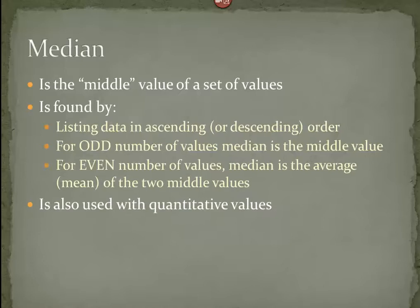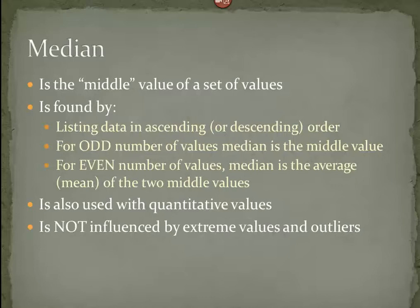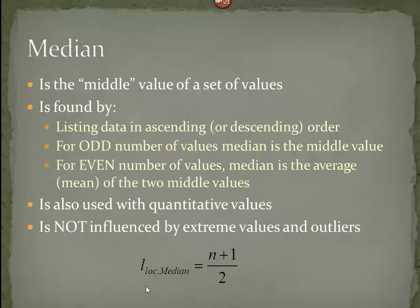This is also used when we're dealing with numbers, since only numbers can really be put in ascending or descending order. However, the benefit of the median is that it's not going to be influenced by those extreme values and outliers. Those zeros will not really affect where the middle value is.